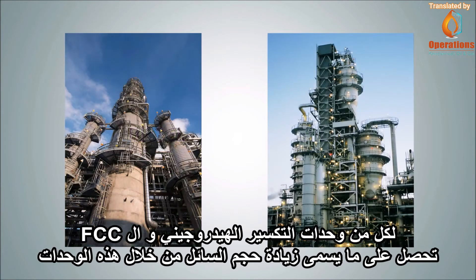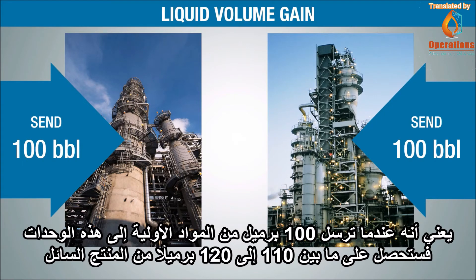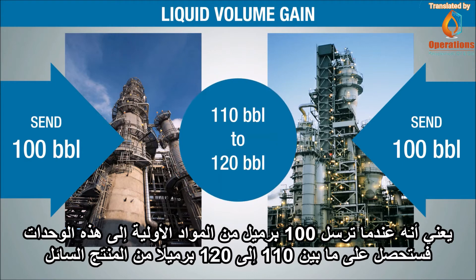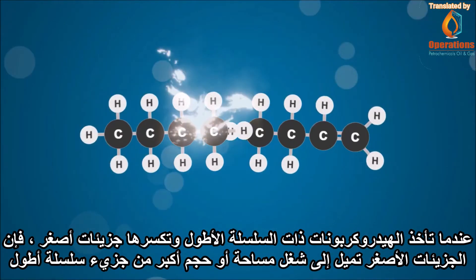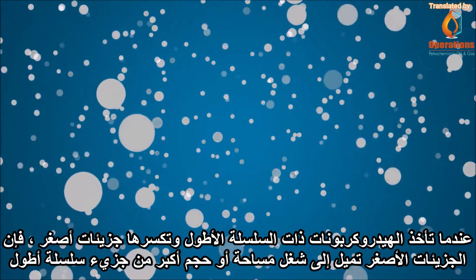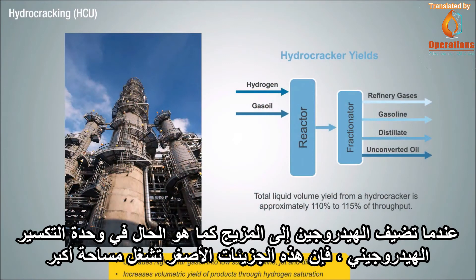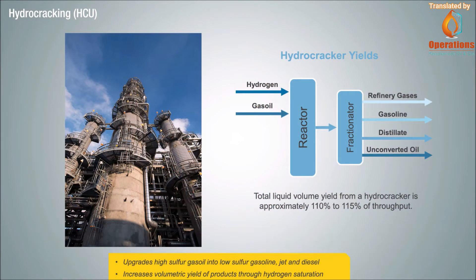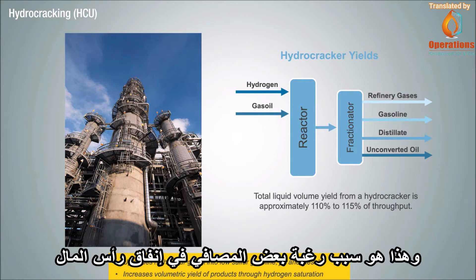For both hydrocrackers and FCCs, you get what is called liquid volume gain through the unit, which means that when you send 100 barrels of feedstock to an FCC or hydrocracker, you get somewhere between 110 to 120 barrels of liquid product. When you take a longer-chain hydrocarbon and crack it down to smaller molecules, those smaller molecules tend to take up more space or volume than one longer-chain molecule. When you add hydrogen to the mix, like in a hydrocracker, those smaller molecules take up even more space. Volume gain can be a big economic driver that provides the incentive to invest in this type of conversion capacity.